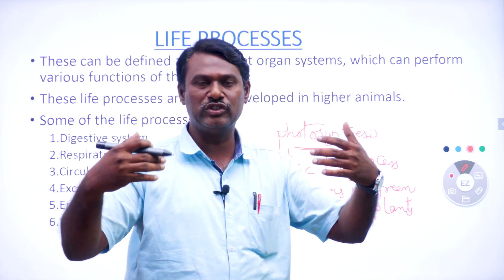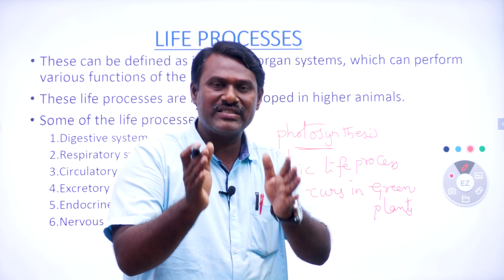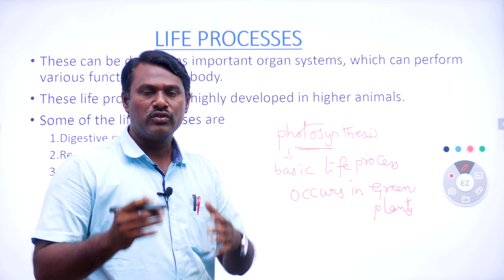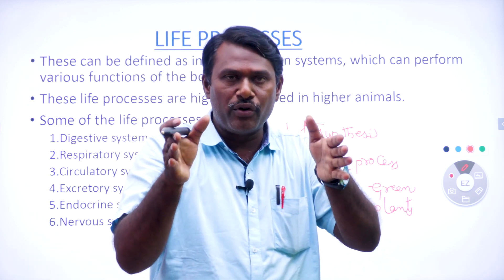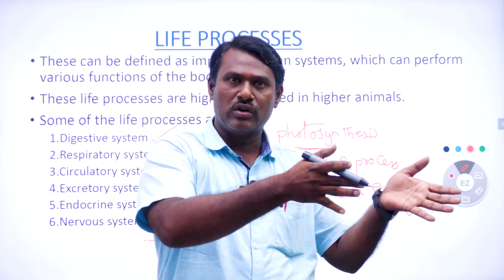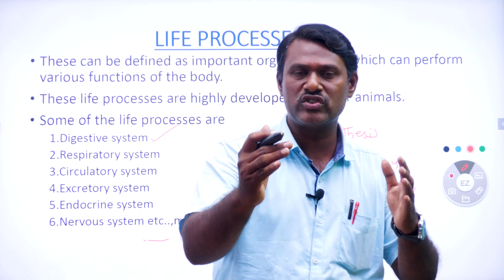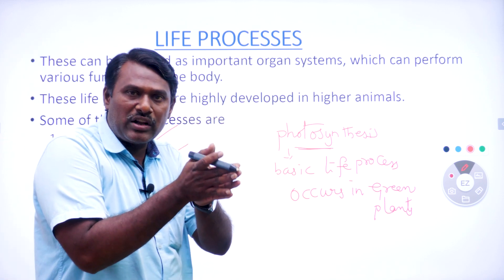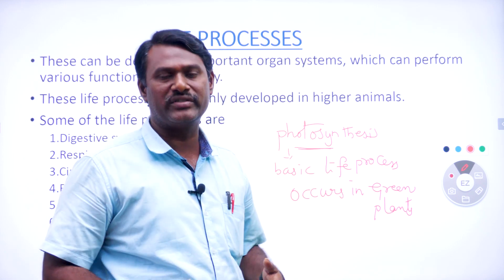We have different types of life processes which occur in living organisms — it includes plants, animals, everything. For example, in human beings we have the digestive system. After photosynthesis, plants prepare food material, and we take that food from plants. That food, taken through the digestive system, is finally converted into glucose, which undergoes the respiratory system to produce energy.